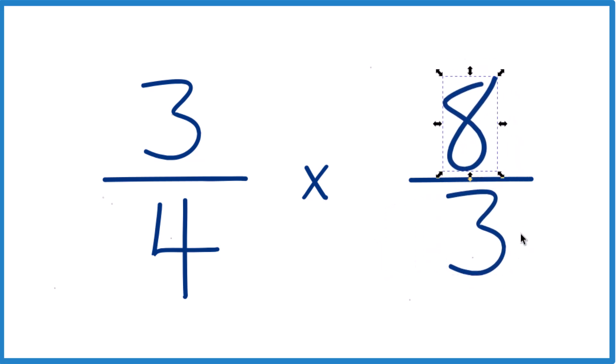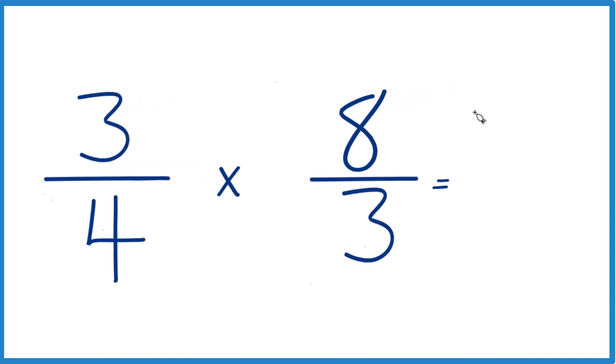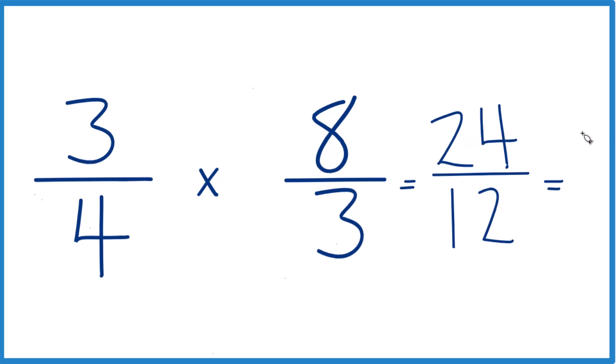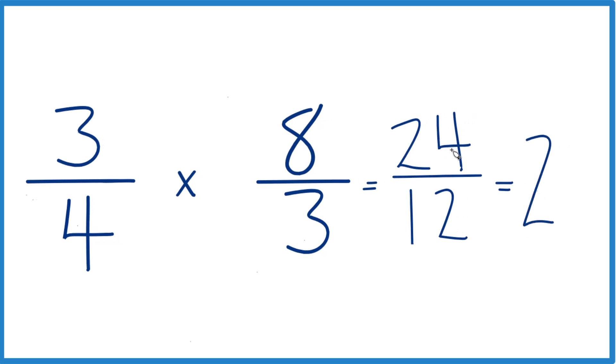This is the multiplicative inverse, and it makes it a lot easier now because we just take 3 times 8, that equals 24, and 4 times 3, that's 12. 24 divided by 12, that equals 2, 2 times 12 is 24.